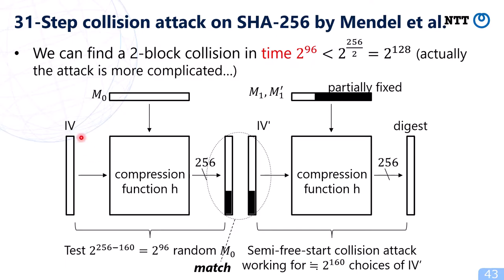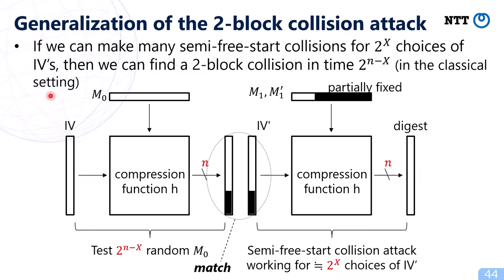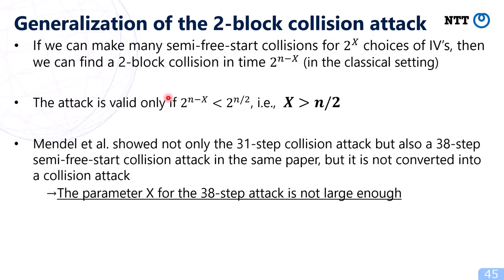This attack can be generalized: if we can make many semi-free start collisions for 2 to the power x choices of IV primes, then we can find a two-block collision in time 2 to the power n minus x. In the classical setting, this attack of complexity 2 to the power n minus x is valid only if n minus x is less than n over 2, which is equivalent to x greater than n over 2. Mendel also showed not only the 31-step collision attack but also a 38-step semi-free start collision attack in the same paper, but it was not converted into a collision attack because the parameter x for the 38-step attack was not large enough.